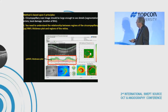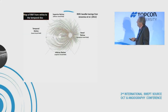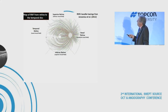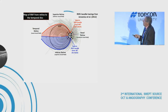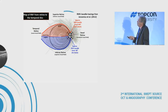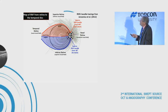The second principle: you must understand the relationship between regions of the circumpapillary thickness plot and regions of the retina. We developed a map relating where axons from ganglion cells enter the disc to where the ganglion cells are. The region from roughly 12 o'clock to 6 o'clock — plus or minus 15 degrees, what would be a nasal step on a visual field — has a unique relationship with the temporal half of the disc: all axons entering the temporal half come from that region.